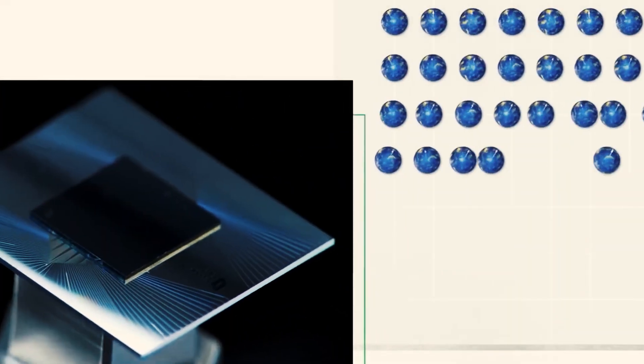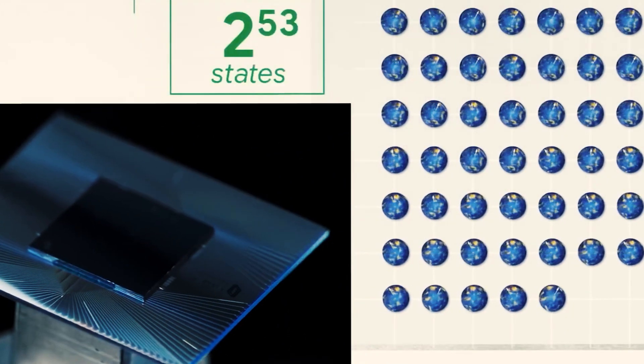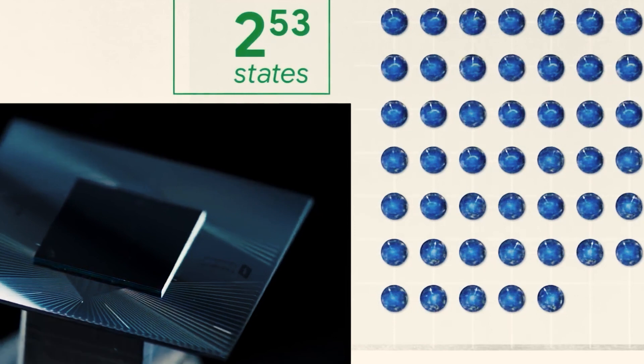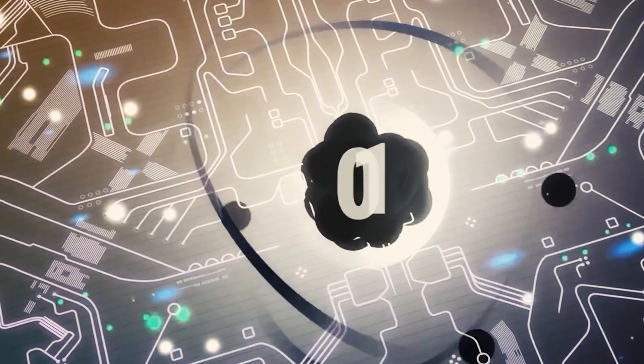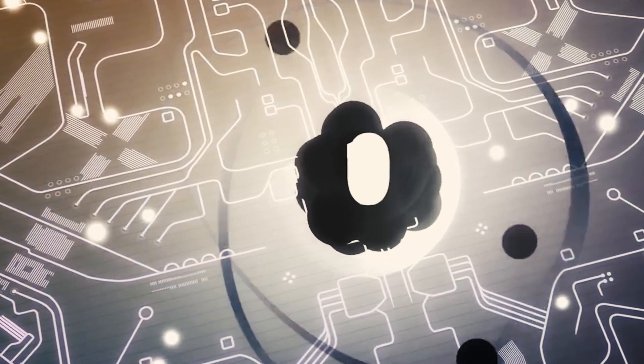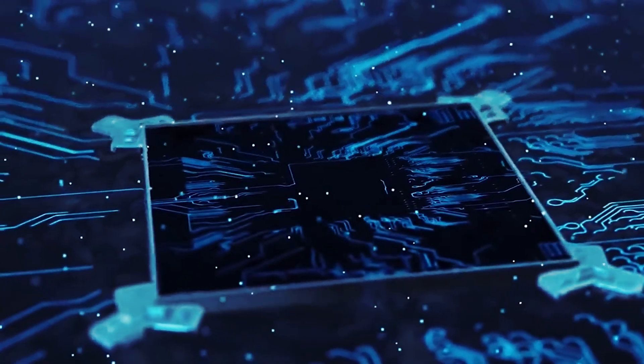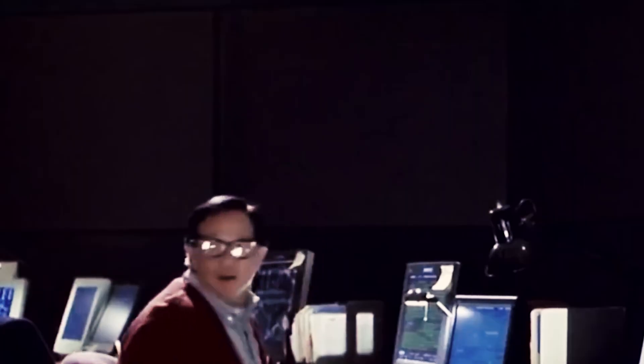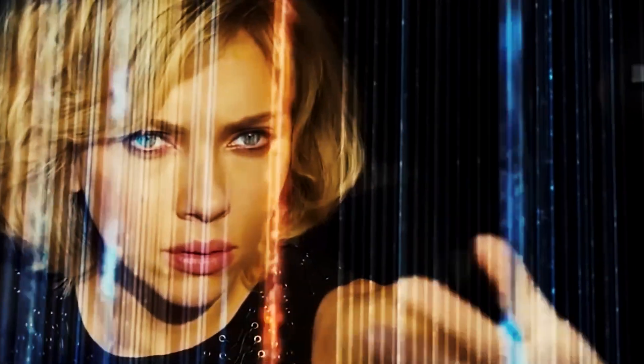The reason we use this technique in encryption is that as the numbers used in prime factorization get larger and larger, it becomes increasingly difficult for conventional computers to factor them. Once you reach a certain number of digits, you find that it would take even the fastest conventional computer months, years, centuries, millennia, or even countless eons to factor it.